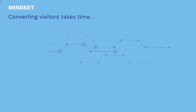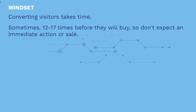Let's talk about mindset, because I'm a big believer in having the right mindset before you get started. You're not going to make a sale or get leads right away just by setting up a Facebook retargeting campaign. Converting visitors really does take time — realistically, sometimes 12 to 17 touch points, meaning you have to get in front of them 12 to 17 times before they will buy. So don't expect an immediate sale.